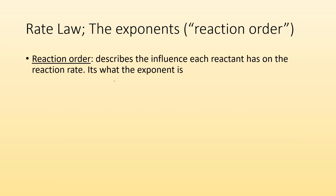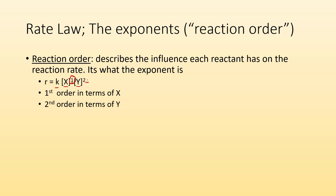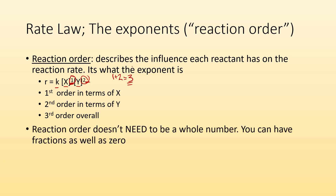The units will be whatever they need to be so that the rate ends up being molar per second. The exponents in the rate law are the reaction order. The reaction order describes the influence each reactant has on the reaction rate. So if this is my generic rate equation — rate equals a constant times X to the first power times Y to the second power — it's first order in terms of X because its exponent is one, and second order in terms of Y because its exponent is two. Overall, this is a third order reaction because one plus two gives three. Reaction order doesn't need to be a whole number; you can have fractions as well, like one half.